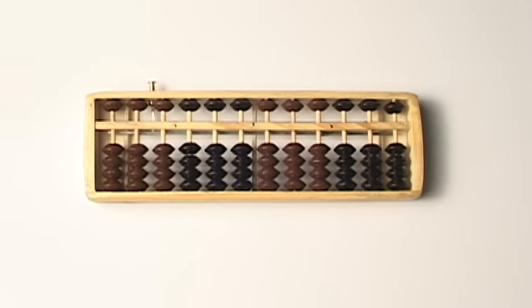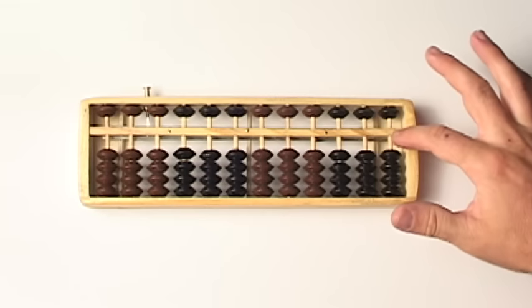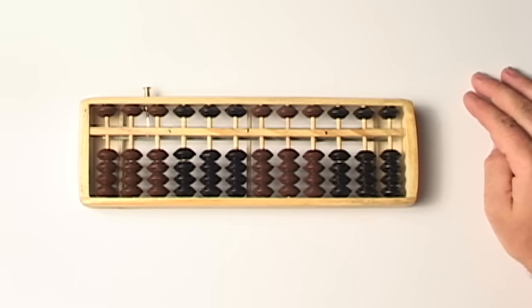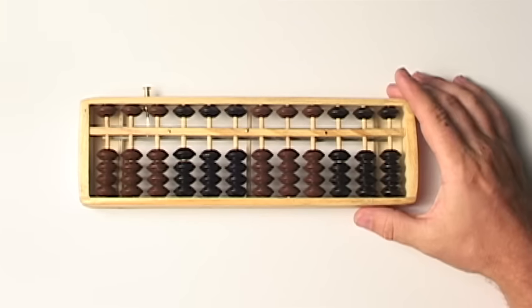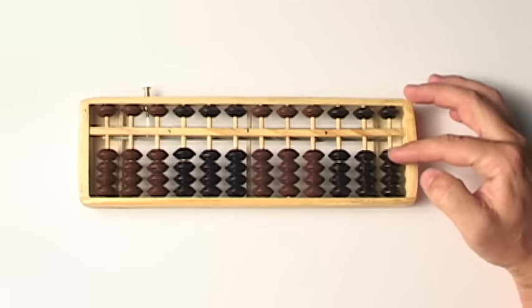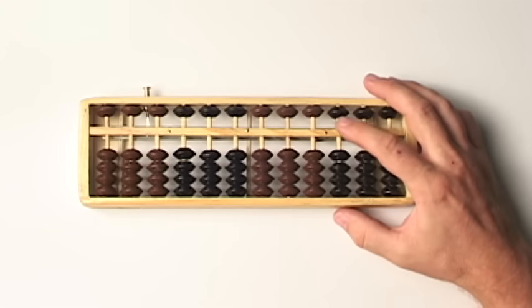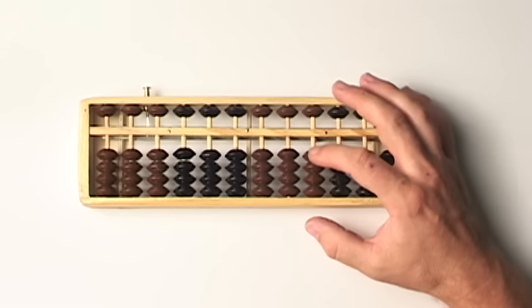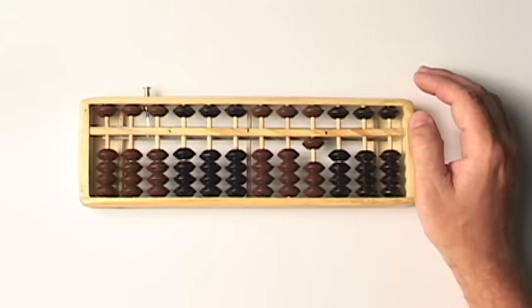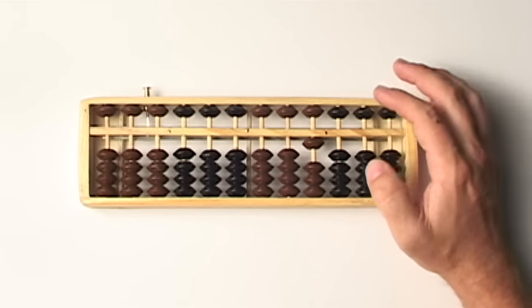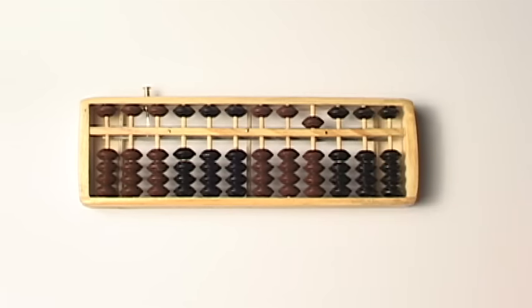Let's talk about the parts of the abacus and how it works. Right in the middle here we have what is called the beam or the reckoning bar. When using an abacus, a bead only gets counted when it's touching the reckoning bar. The beads up top get counted when they're moved down towards the reckoning bar.